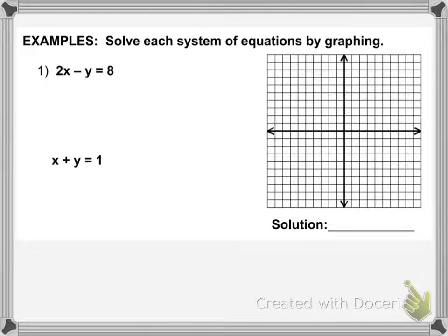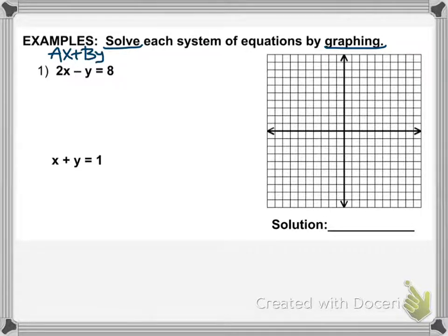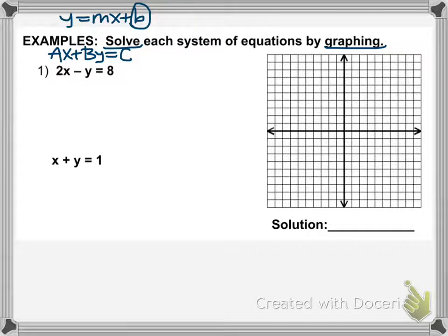So let's try some examples. In order to solve a system by graphing, you're going to graph each equation. These two equations are both in standard form — AX plus BY equals C — which means I can't graph straight from this form. So we need to convert them to slope-intercept form: Y equals MX plus B. Once our equation looks like this, we begin with B by graphing our Y-intercept on the Y-axis, and then we move with M, our slope, using rise and run.